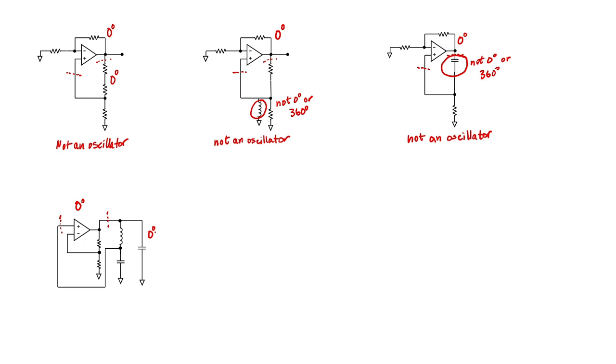A single capacitor can shift the phase of a signal between negative 90 degrees and zero degrees, with the exact amount of the phase shift depending on the frequency of the particular signal. The same thing is true for the inductor and the other capacitor. That means that a signal passing through this feedback network will have a net phase shift somewhere between negative 270 degrees and zero degrees.